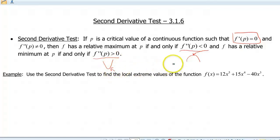Okay, so now we're going to go ahead and use this test on a polynomial function. So that polynomial is f of x equals 12x to the fifth plus 15x to the fourth minus 40x to the third. So we're going to find the extreme values for this. And if you watch the previous screencast, we actually use the same function, but we use the first derivative test. So this is kind of a place where you can compare and contrast them.